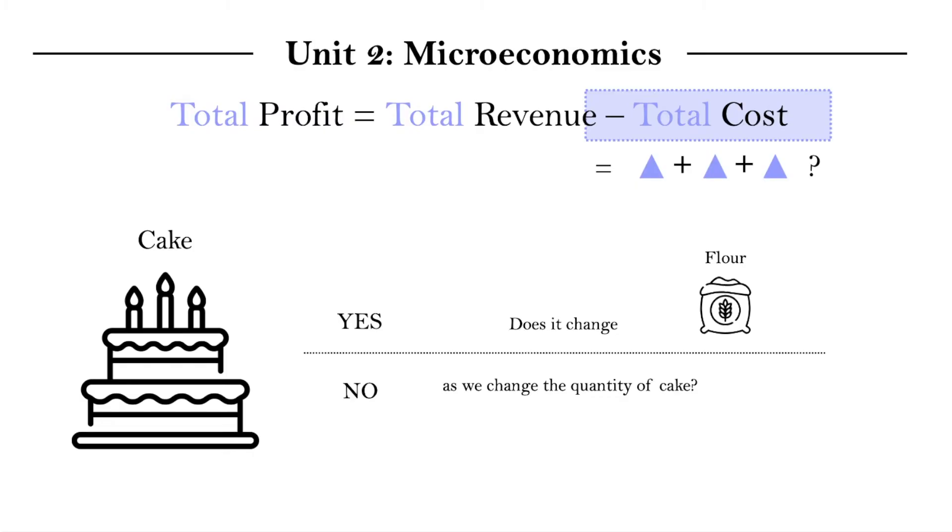Now let's think about another cost that goes into producing cakes. We would need the building of the bakery, right? We need somewhere to make the cake. In order to have the building, we would need to cover the cost of rent. So would the cost of rent increase or change at all as we change the quantity of cake? In this case, it is no. We would be paying a fixed cost of rent to have the bakery building, and that doesn't change no matter whether we have 10, 20, or 30 cakes being produced.